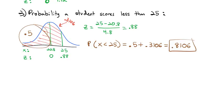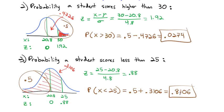You can see how the picture helps — in example 2 we had to subtract from 0.5 to get the area we wanted, while in example 3 we had to add to 0.5 to get the area we wanted.